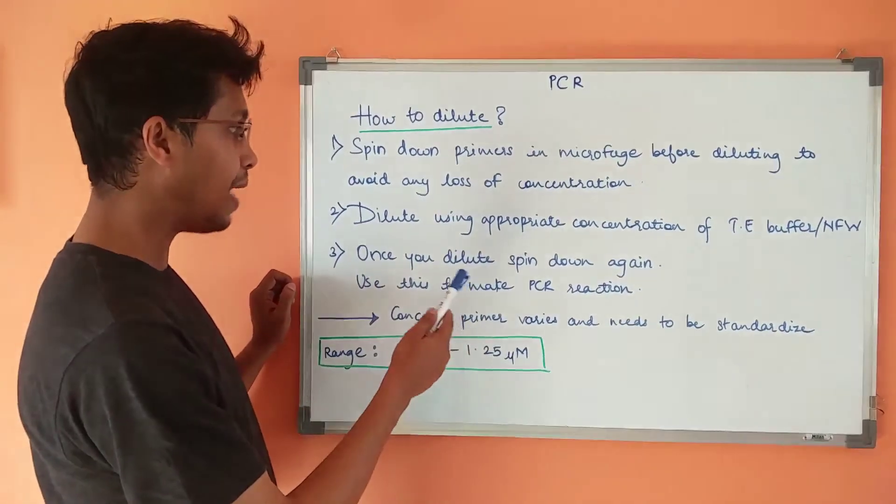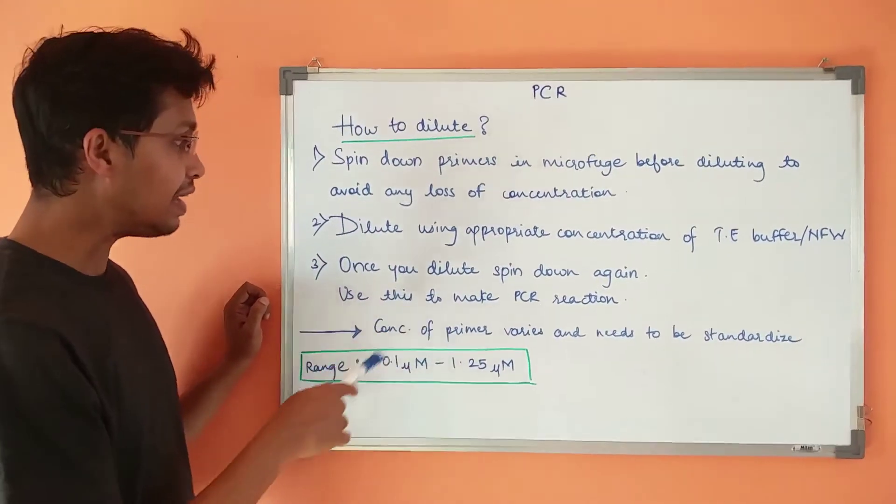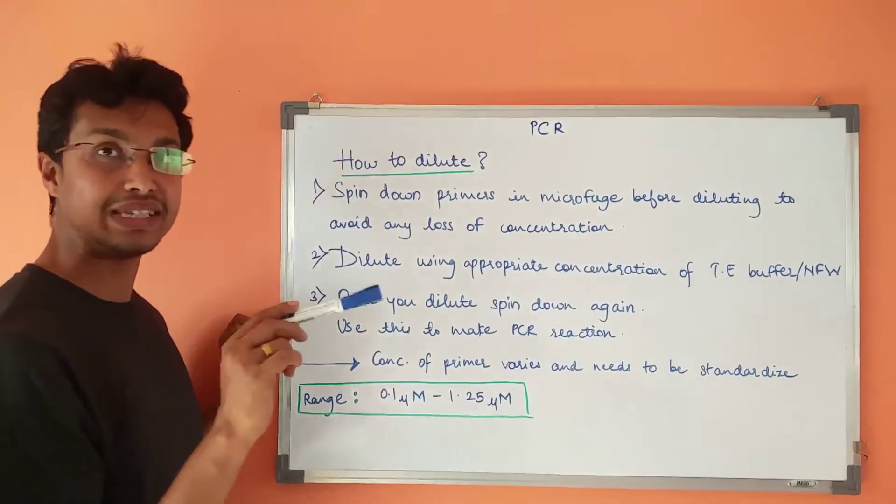Once you dilute your primer, spin down that again, then you can use it to make your PCR reaction.